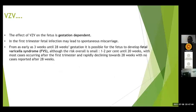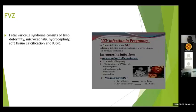Shingles: following primary infection the virus remains dormant in the sensory nerve root ganglia and can reactivate to give a vesicular irritant rash in a dermatomal distribution. The effect of varicella zoster virus on the fetus is gestationally dependent. In the first trimester fetal infection may lead to spontaneous miscarriage. From as early as 3 weeks until 28 weeks it is possible for the fetus to develop fetal varicella syndrome — the overall risk is small, around 1 to 2% until 20 weeks, with most cases occurring after the first trimester and rapidly declining toward 28 weeks. The fetal varicella syndrome features include skin scarring, limb deformity, microcephaly or hydrocephaly, soft tissue calcification, and IUGR.